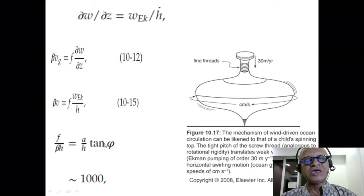You can write it as a over h tan phi, so when you consider the scale of the Earth's radius and the height of the water column and tan phi at any latitude, you essentially get an amplification of a thousand, which explains why vertical Ekman pumping of 30 meters per year can get amplified into horizontal velocities of centimeters per second.